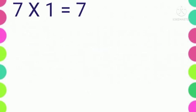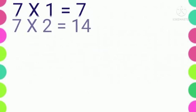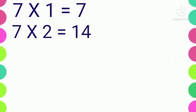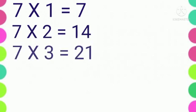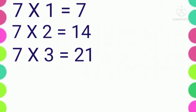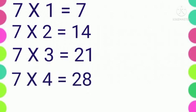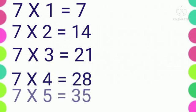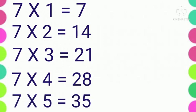Seven ones are seven. Seven twos are fourteen. Seven threes are twenty-one. Seven fours are twenty-eight. Seven fives are thirty-five.